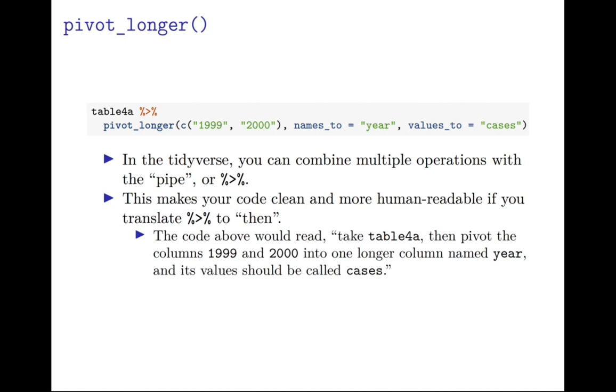This is really useful. It's a really useful way, and why the tidyverse is so great - it makes your code clean but also more human readable. You can take that pipe and translate it to the word 'then'. So what this is saying above is that you take table 4a, then pivot the columns 1999 and 2000 into one longer column named year, and its value should be called cases. The implementation of tidyverse has been really helpful for allowing you to do multiple operations at one time and being able to read those operations like a sentence.